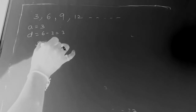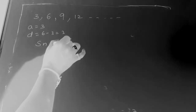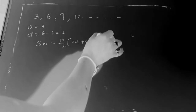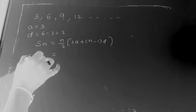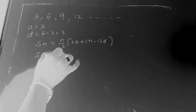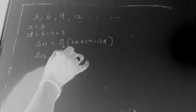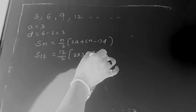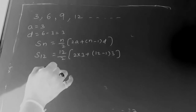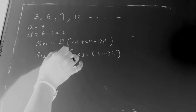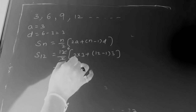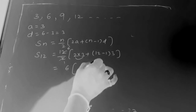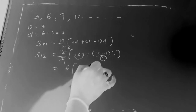We need to find Sₙ. The formula is Sₙ = n/2 × [2a + (n−1)d]. There are 12 classes, so n = 12, a = 3, d = 3. Substituting: S₁₂ = 12/2 × [2×3 + (12−1)×3] = 6 × [6 + 11×3] = 6 × [6 + 33].